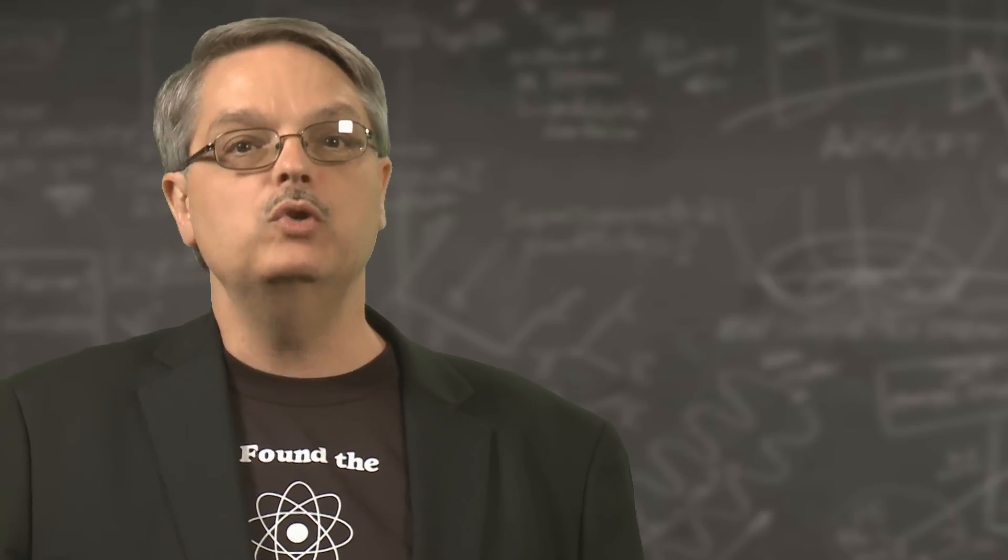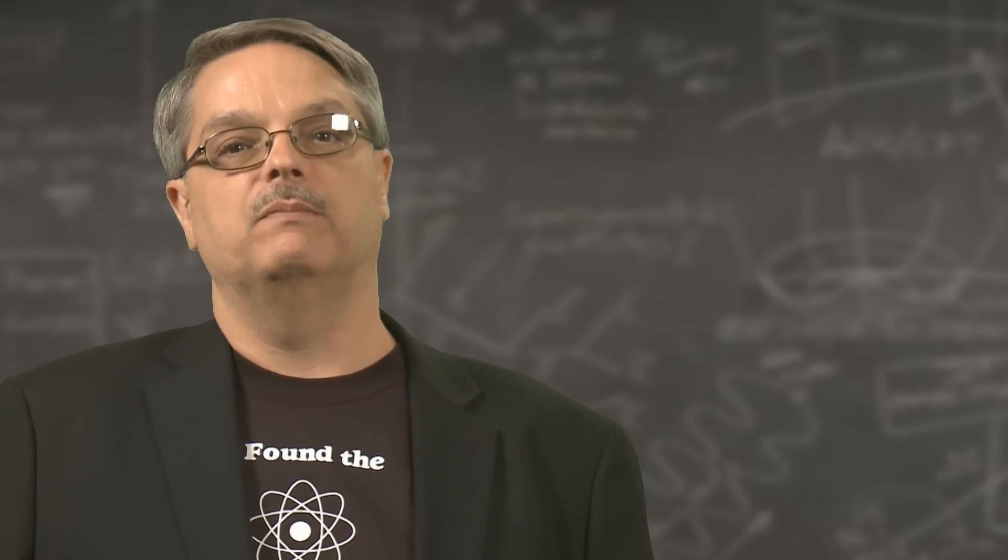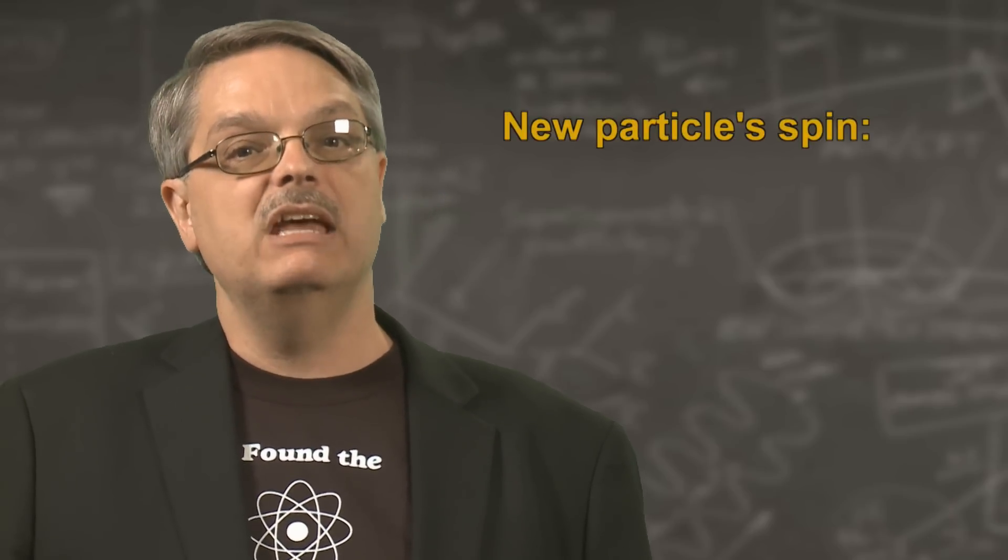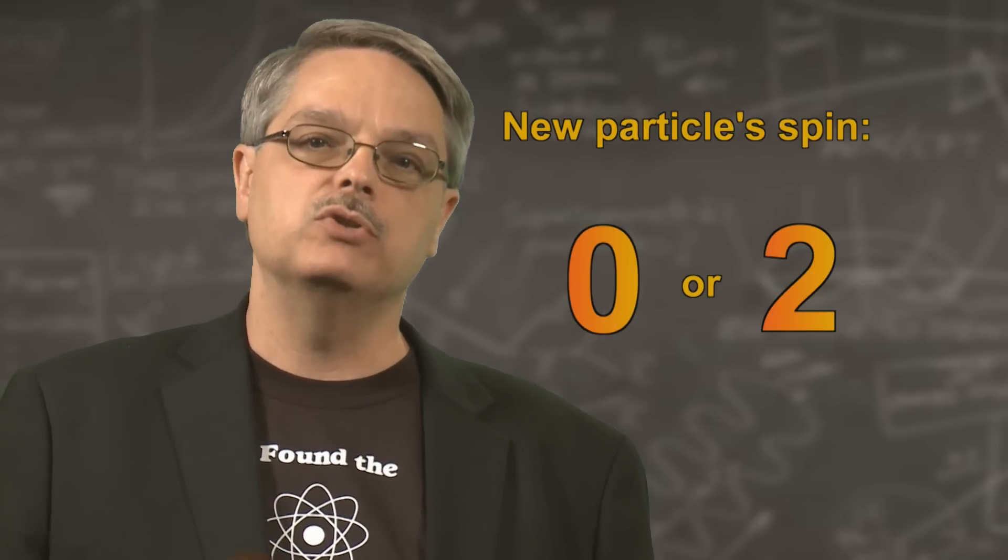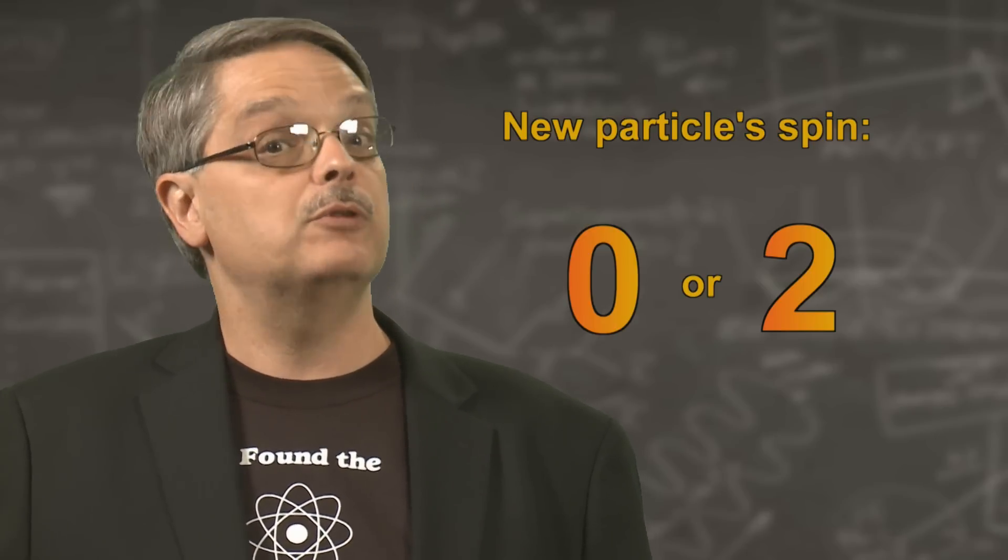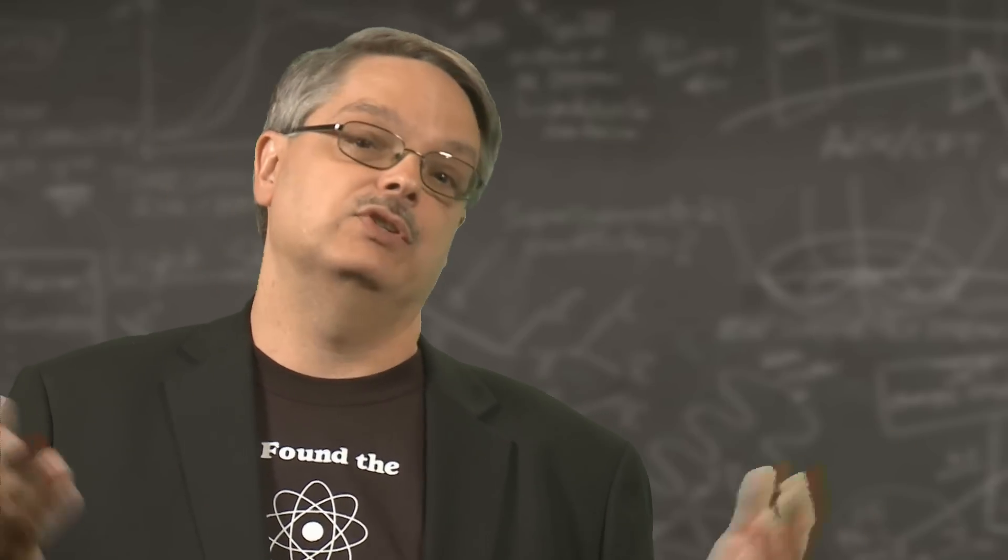However, two new measurements were also made. The first was the spin of the new particle. From the patterns observed in 2012, we knew that the new particle had to have either a spin of zero or two. It might be hard to imagine how you would measure the spin of a subatomic particle, but it's easy to understand how you would do it in principle. If a particle has a spin of zero, that means it isn't spinning.